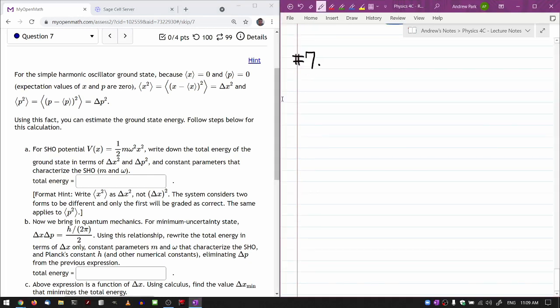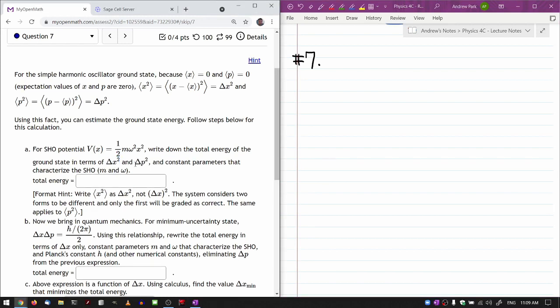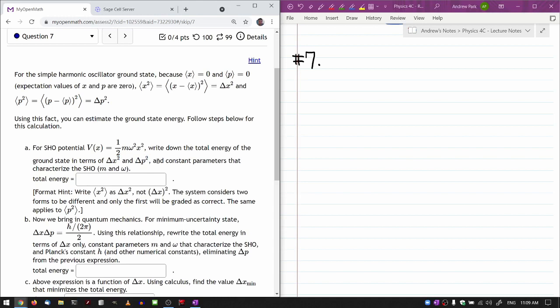So it says to write down the total energy of the ground state in terms of delta x squared and delta p squared. All right, let me do this first. So I'm going to write down the...